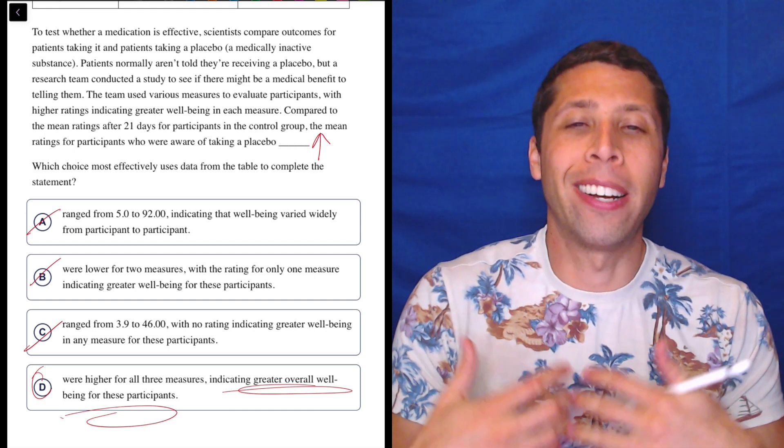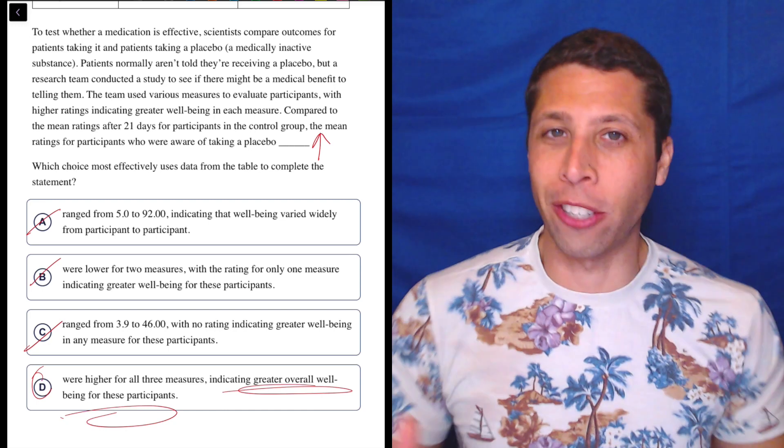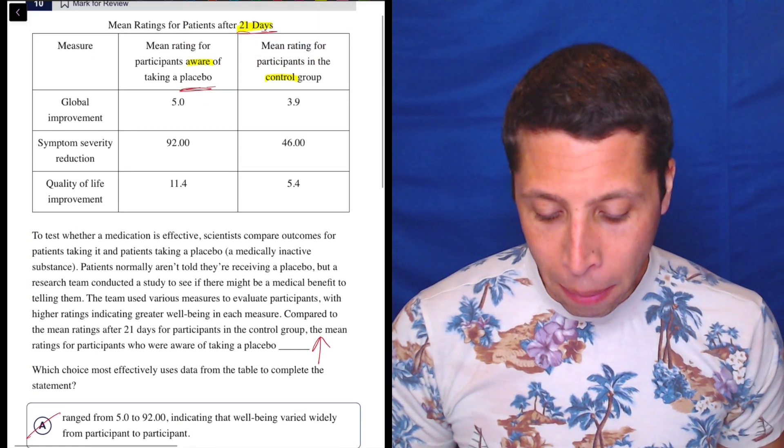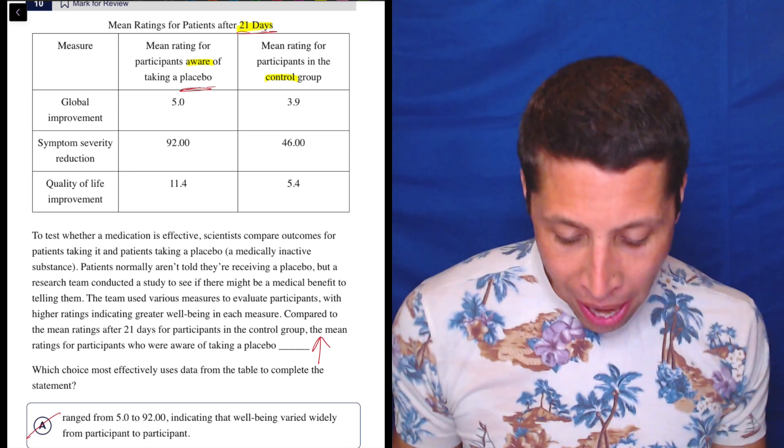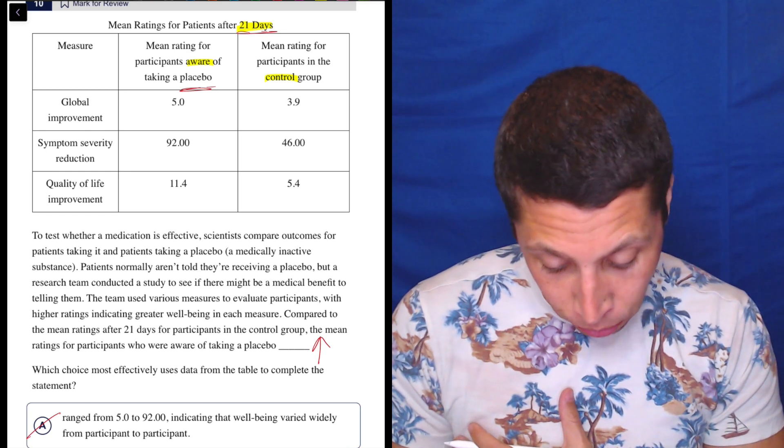Or is what matched with what we were looking at, right? Like we don't actually understand what's going on here, but they did say in the passage that the higher numbers correspond to higher mean rating.